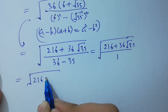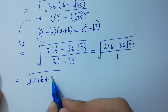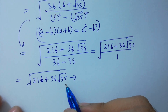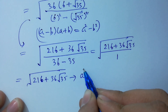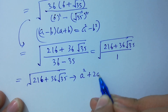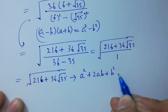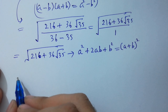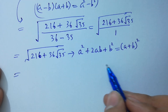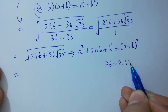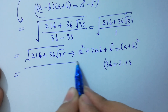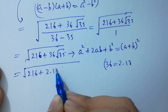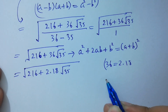We have 216 plus 36 square root of 35. I am going to convert this into the form a squared plus 2ab plus b squared, which equals (a plus b) whole squared. For this, follow the steps: since 36 equals 2 times 18, it becomes square root of 216 plus 2 times 18 times square root of 35.